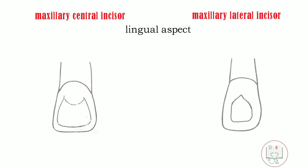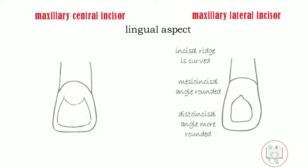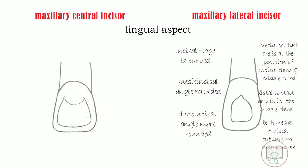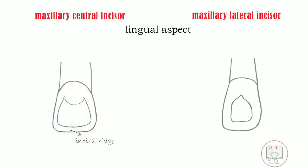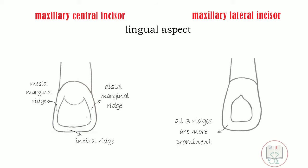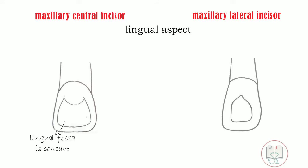From the lingual aspect, the differences in outline form observed from the labial aspect are the same. All three ridges — the incisal ridge, mesial marginal ridge, and distal marginal ridge — are more prominent in the lateral incisor than the central incisor. Also, the cingulum is more convex and well developed in the lateral than the central incisor.